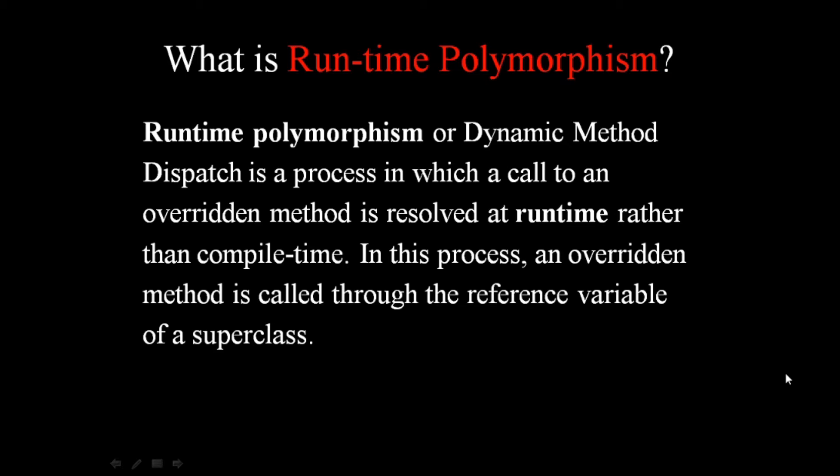Runtime polymorphism, or dynamic method dispatch, is a process in which a call to an overridden method is resolved at runtime rather than at compile time. In this process, an overridden method is called through the reference variable of a superclass. This is how runtime polymorphism works.